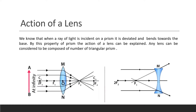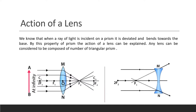Now I will discuss the action of a lens — that is, how rays of light are deviated when they pass through the lens. When a ray of light is incident on a prism it bends toward the base. In the case of a convex lens, all rays traveling parallel to the principal axis will converge to the principal focus. In a concave lens, all rays parallel to the principal axis will diverge from the principal focus.